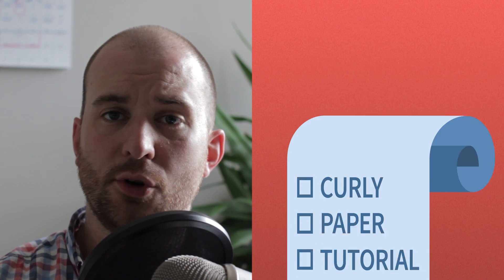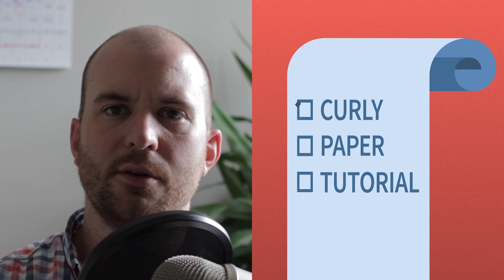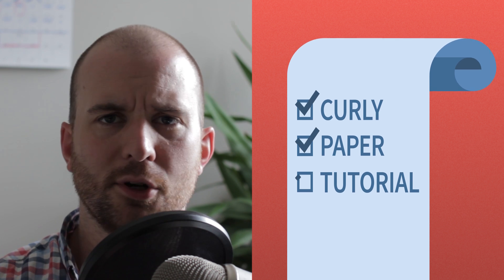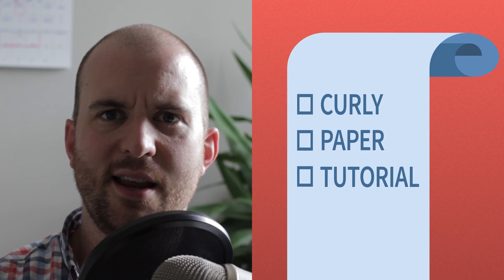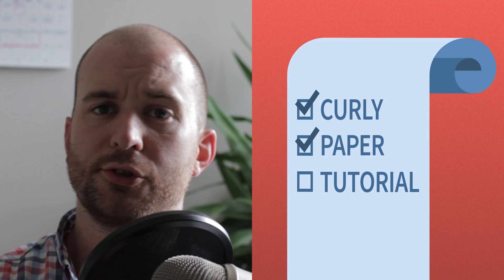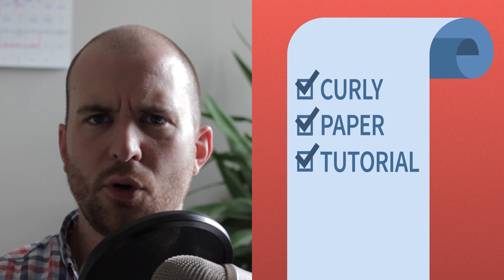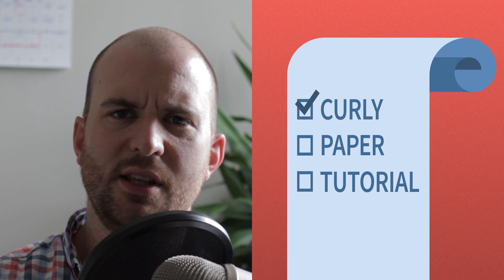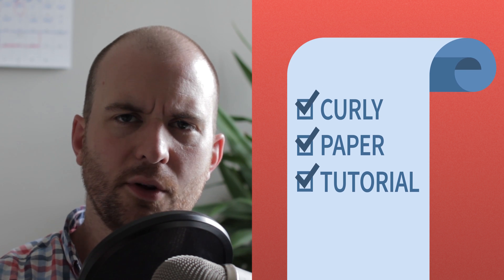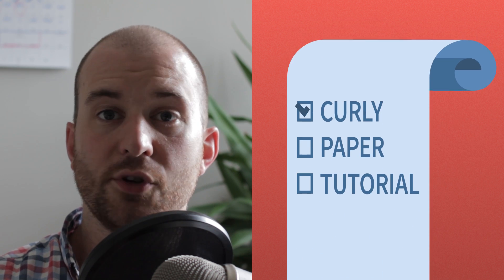Hi everybody, this is Evan Abrams from the E.C. Abrams tutorial channel. In this After Effects tutorial, we're going to be making some curly, bouncy paper. It'll look kind of like the thing that's on the screen right now. It's perfect for lists, or scrolls, or lists of scrolls. Just pay attention up in that top corner where you see that curly part of the paper kind of going when it comes up on screen, or moves around, or leaves the frame.